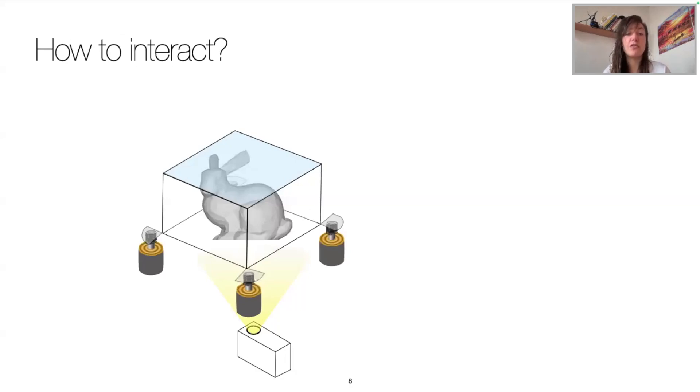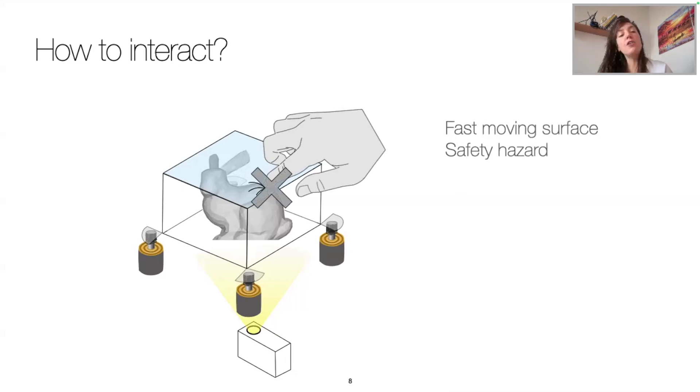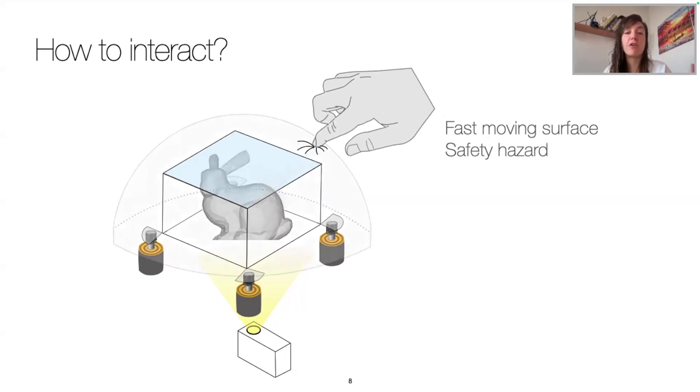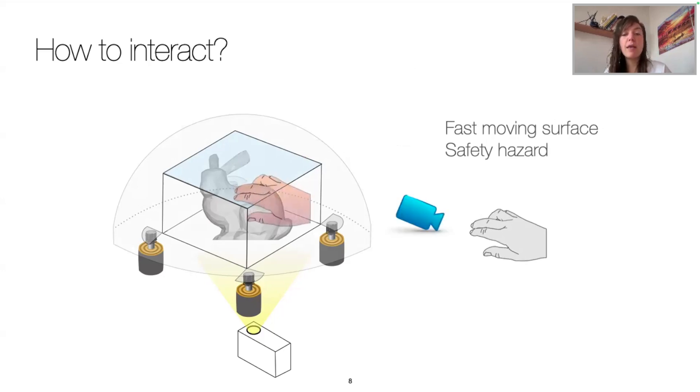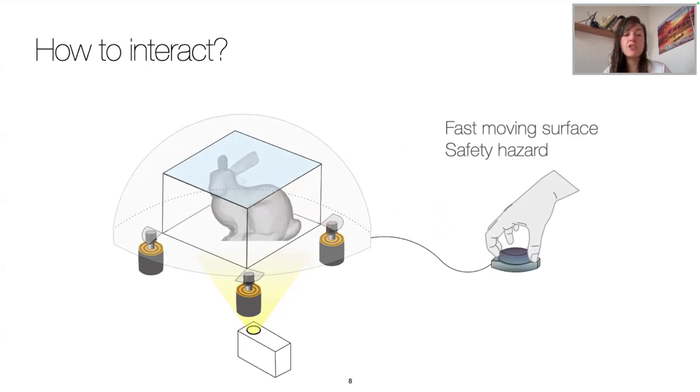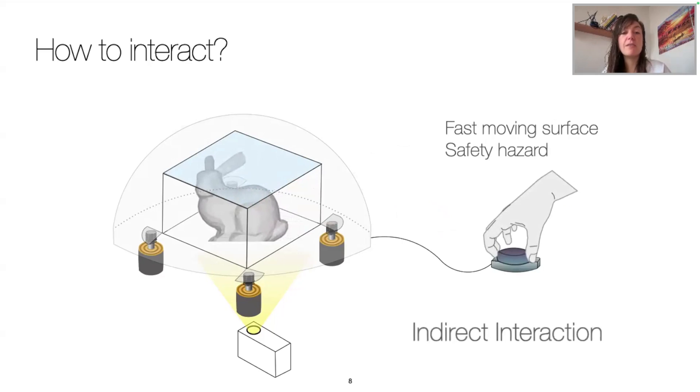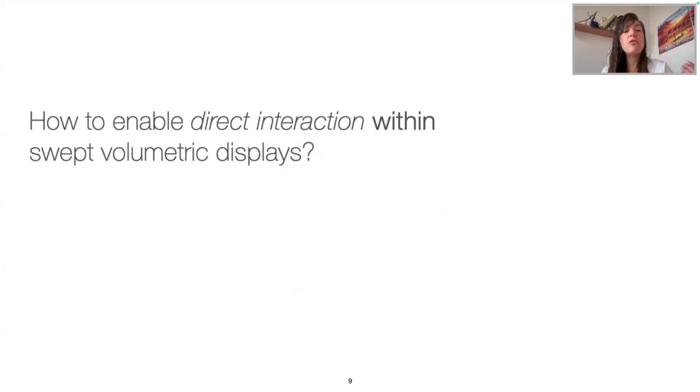So volumetric displays are great to render true 3D objects, but how do we interact with them? Well, we might want to put our hands within the volume. However, we do have a fast-moving surface causing a safety hazard. Usually, volumetric displays have a safety dome around their display volume so that the user can touch it in a safe manner. The interaction can be then pointing into the volume, or by tracking the hands with the camera and replicating the movement with an avatar, or more classically, through a 3D mouse. So basically, everything we can do consists in indirect interaction.